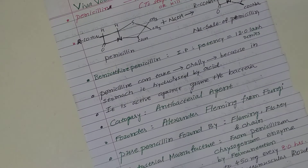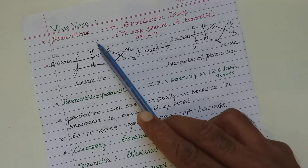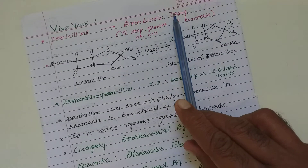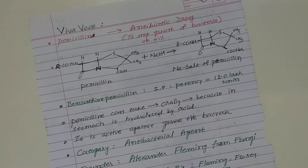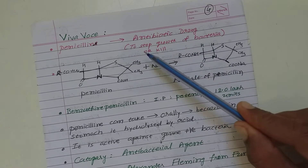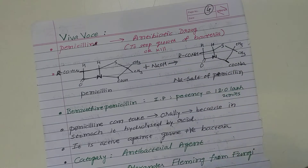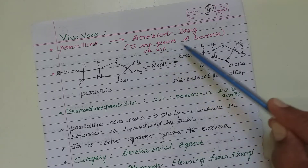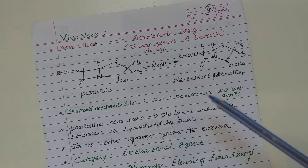Now I am going to discuss the viva questions regarding penicillin drug. Penicillin is one type of antibiotic or antibacterial drug. Those drugs which are useful to stop the growth of bacteria or to kill bacteria are known as antibiotic or antibacterial drugs.